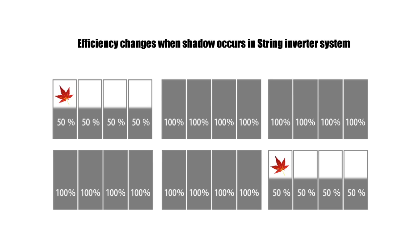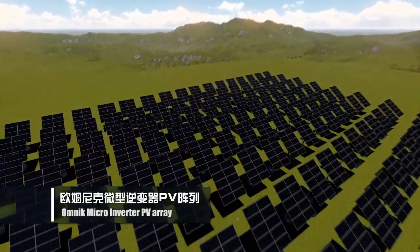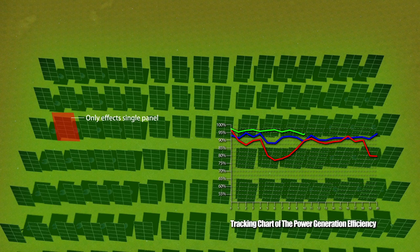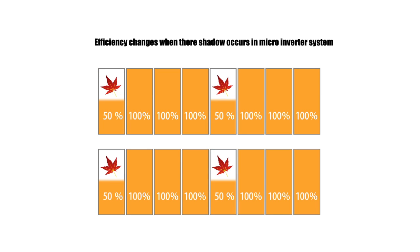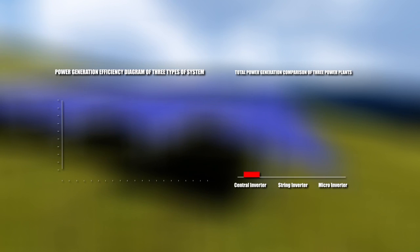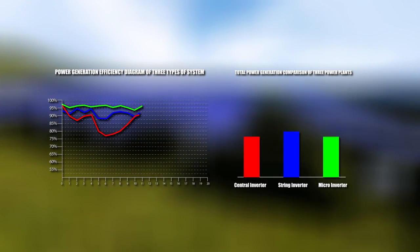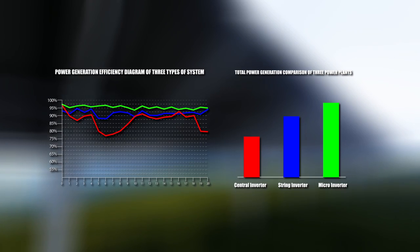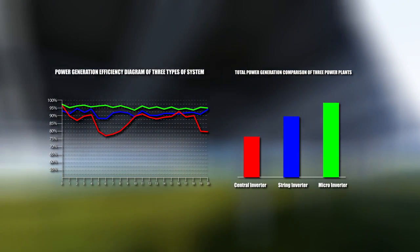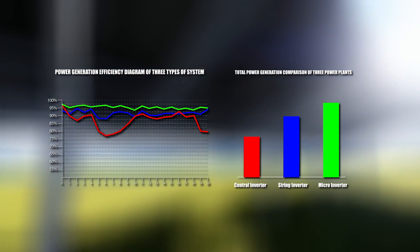With micro inverters, there will be 2,000 MPPTs for a 500-kilowatt project. Each panel works at its own maximum efficiency — shadows, different brands, tilt angles, and other factors will not influence other panels. In conclusion, considering total power output with all parameters included: central inverters generate relatively less electricity, string inverters generate more, and micro inverters generate the most.